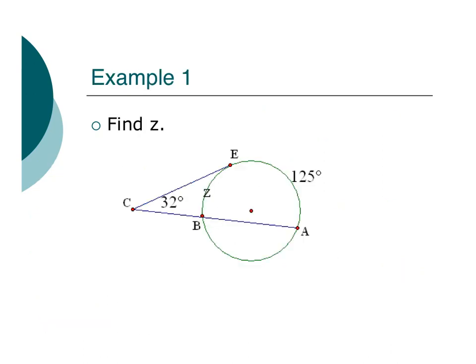All right, our first example using our new awesome super cool formulas. And what do you know, just what I was talking about. I might not give you both the arcs and expect you to find this guy here. I could leave this as the unknown. Now, this is an out angle. This is kind of a combination of a secant and a tangent, but the formula still works the same. I'm going to have 125, my bigger arc, minus z, which is my smaller arc, divided by 2, and that's going to equal my out angle, which is 32.